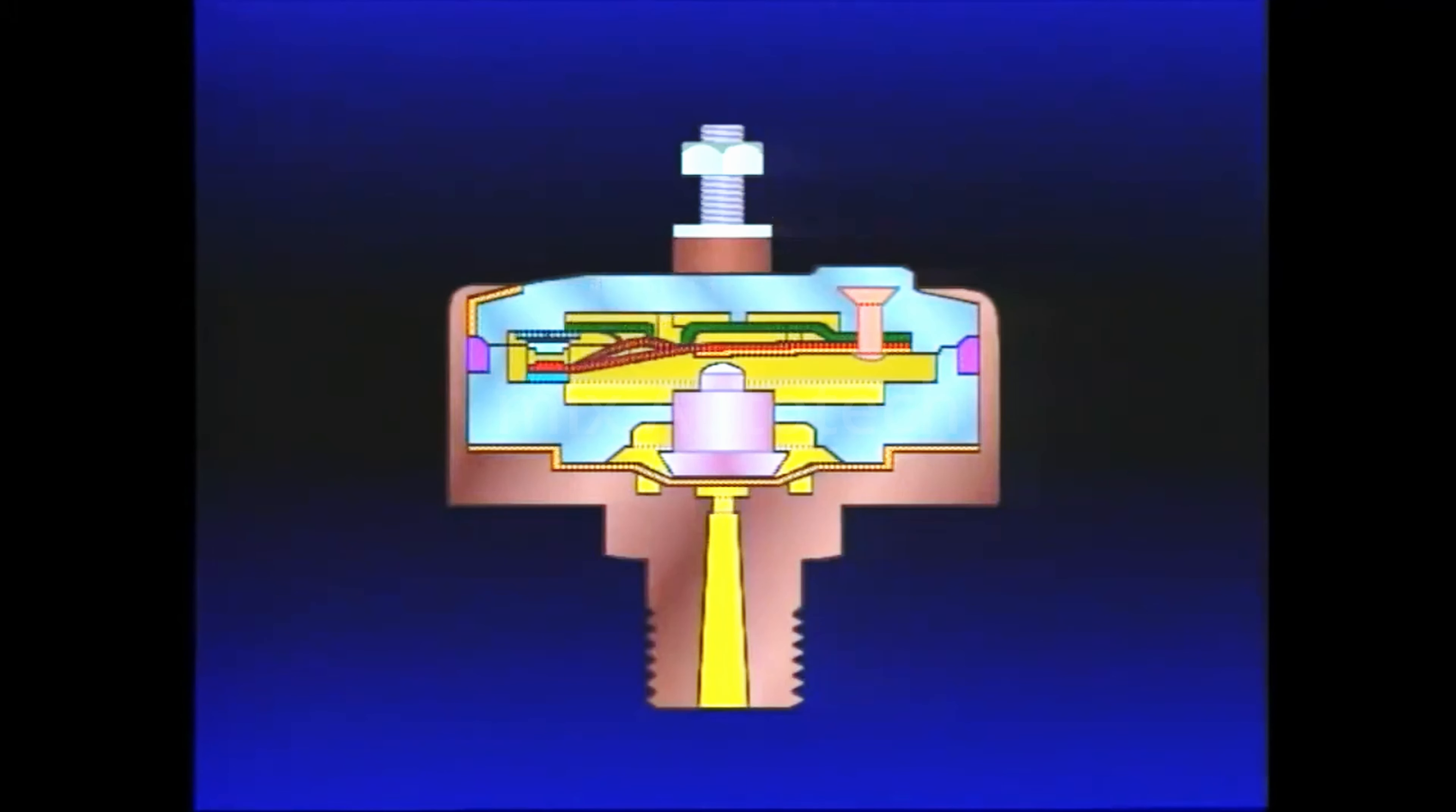During a brake application, air flowing to the brake actuators or relay valve also reaches the stoplight switch inlet. Air pressure is immediately present beneath the SL5's diaphragm.